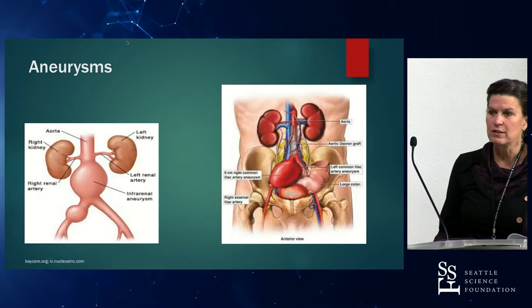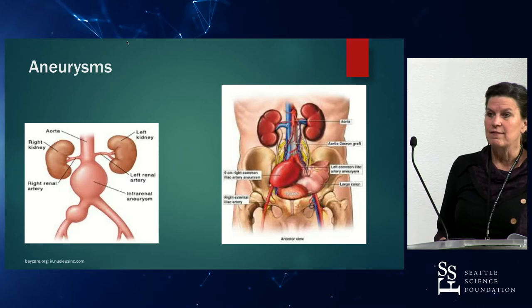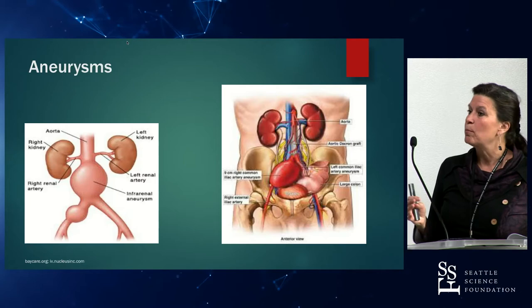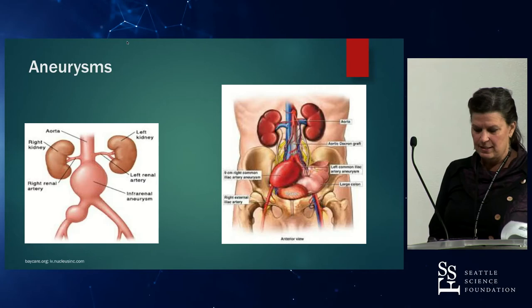Aneurysms can occur, and it can be very difficult or impossible to operate around them. If possible, you need to get a vascular surgeon to treat the aneurysm with a stent, because that gives you the ability to mobilize the vessel much more easily and safely once the stent has been placed.